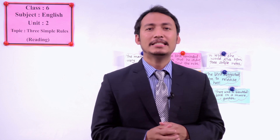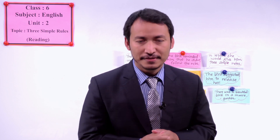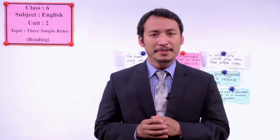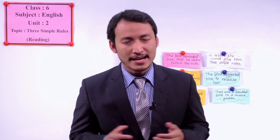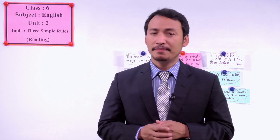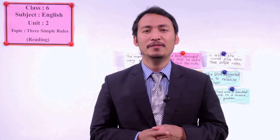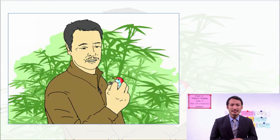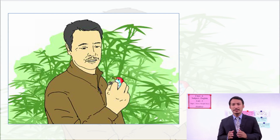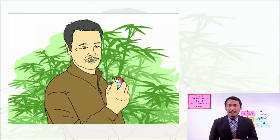Let's start with the pictures at the beginning of the story and then go into the story and the exercises. The first picture you can see in your book is this man. Can you describe this picture, students? Who is this person and what is he doing?